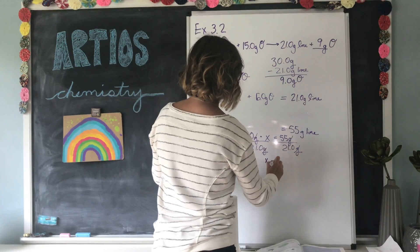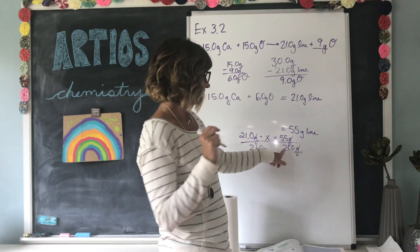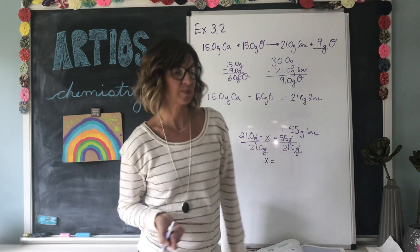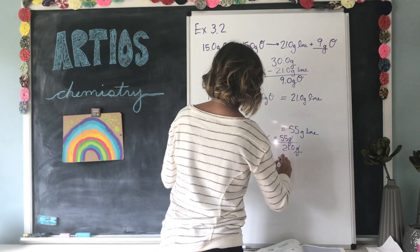So X equals, type it into your handy-dandy calculator, 55 divided by 21. I would, but my calculator is my phone, which is recording me at the moment. So 55 divided by 21, I know, is 2.6.